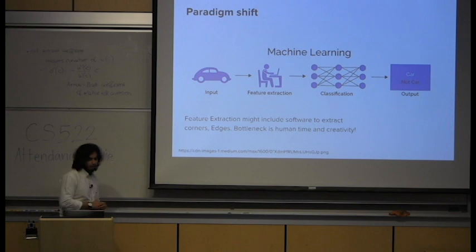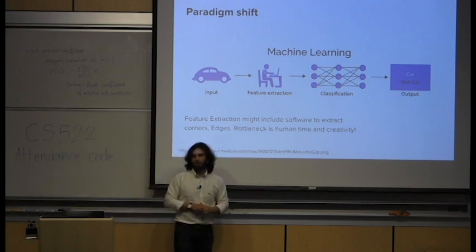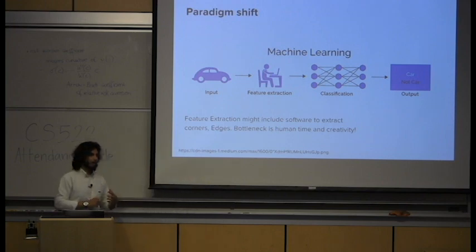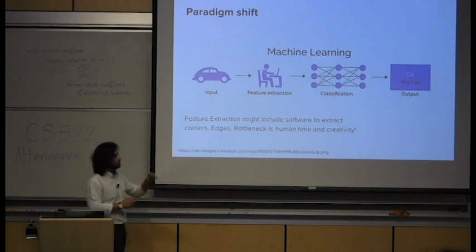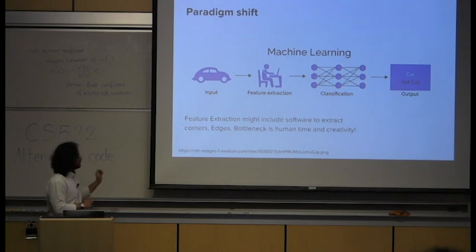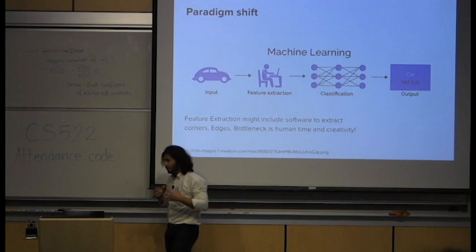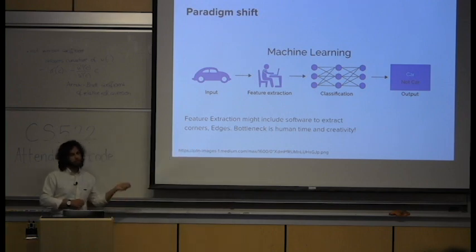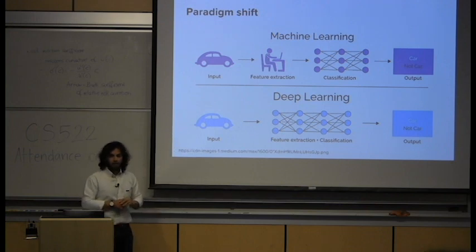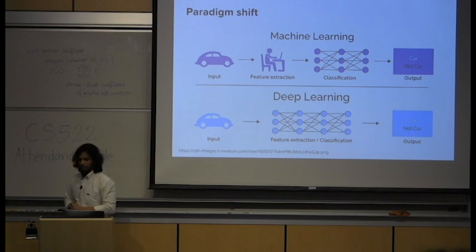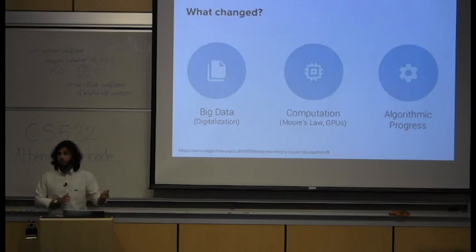Traditionally, you have some kind of input — an image, audio — and a machine learning engineer responsible for feature extraction. In healthcare, this has meant understanding how MRIs work, coding up a way to extract features from raw data, then passing those into an algorithm like an SVM or logistic regression to get an output. The problem has been that feature extraction is the bottleneck, because we're limited by what we think will be useful features. That's where deep learning changed the game — eliminating feature extraction and going directly from input to output. A few things made this possible: data, computation, and algorithmic progress.